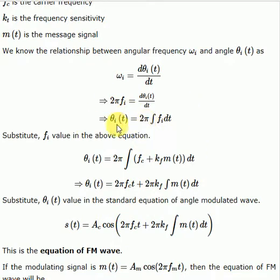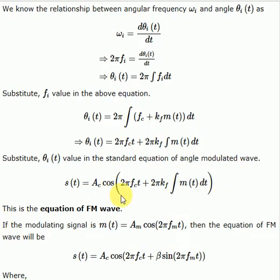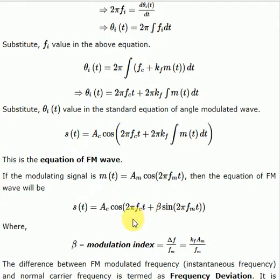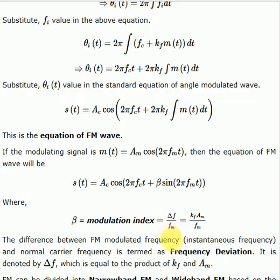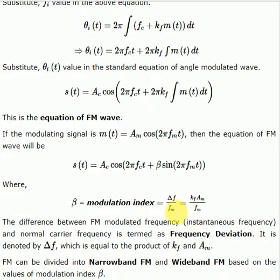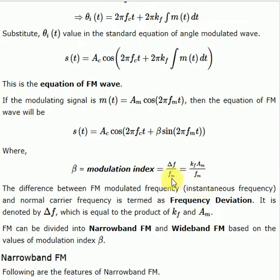Substituting f_i, we get θ_i = 2π integral of (f_c + k_f m(t)) dt = 2π f_c t + 2π k_f integral of m(t) dt. This gives us the FM equation: s(t) = A_c cos(2π f_c t + β sin 2π f_m t), where β is the modulation index. β = Δf/f_m or k_f A_m/f_m, where Δf = k_f A_m. Δf is called the frequency deviation.